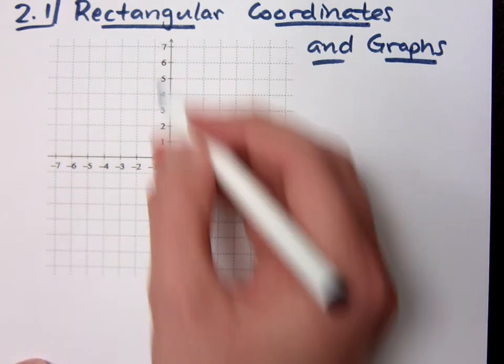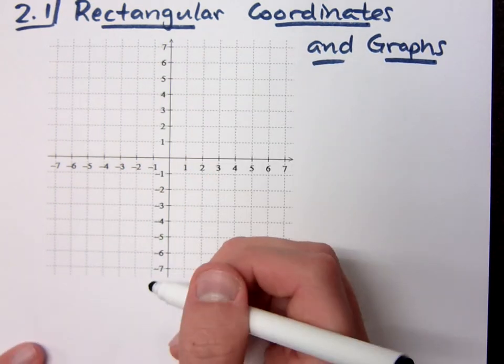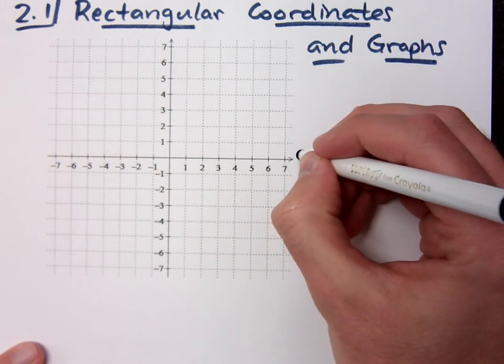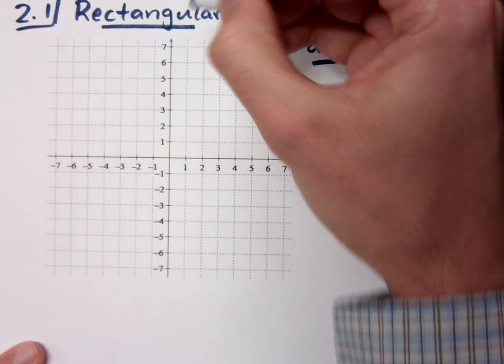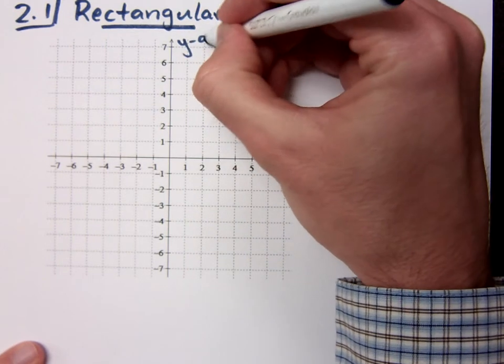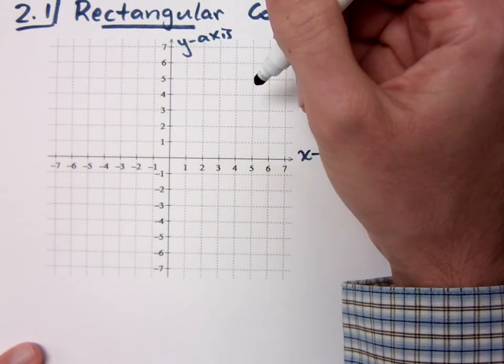What are these big number lines called? Axes. What is this one? Of course, this is your x-axis. What is this guy right here? It's your y-axis, yes.